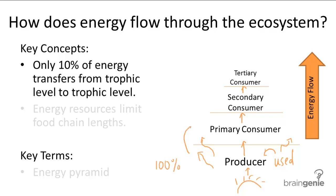Producers will transfer 10% of the energy to primary consumers. Primary consumers transfer 10% of the 10%, so only 1% to the secondary consumers. And secondary consumers transfer only 0.1% to tertiary consumers. So 0.1% of the original 100% is given to tertiary consumers.